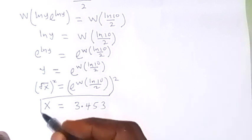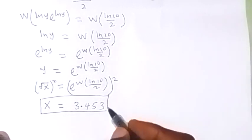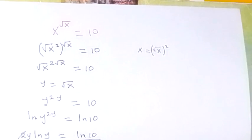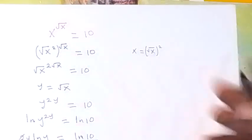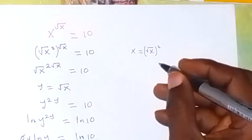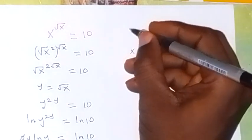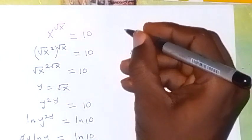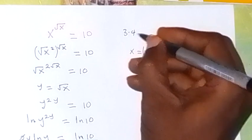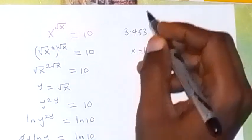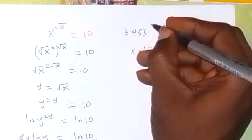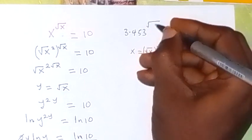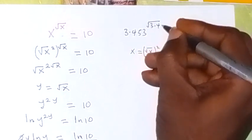Then when we check from what is given to us, we can check from there and we put the value of x. So we have x is 3.453, which is x = 3.453.